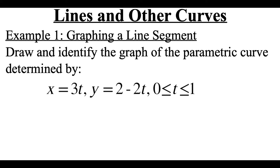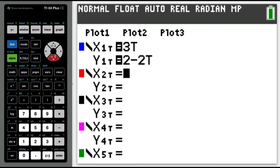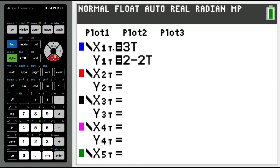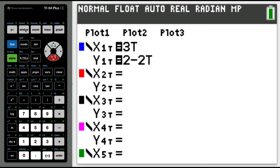I'm going to use my calculator to help me out on this one. So in my calculator I'm in parametric mode. For x I typed in the 3t, for y I typed in the 2 minus 2t.